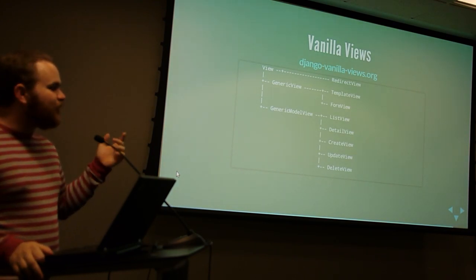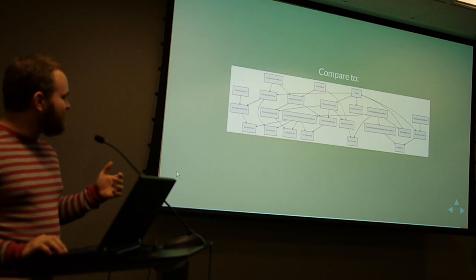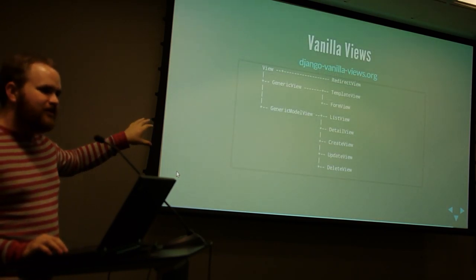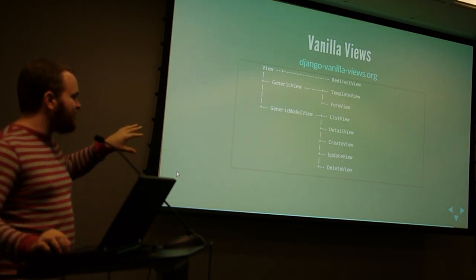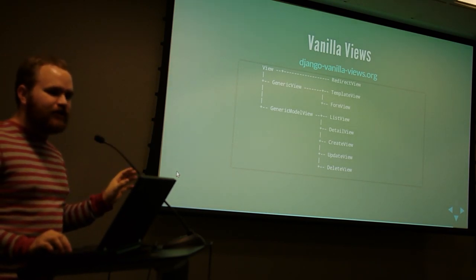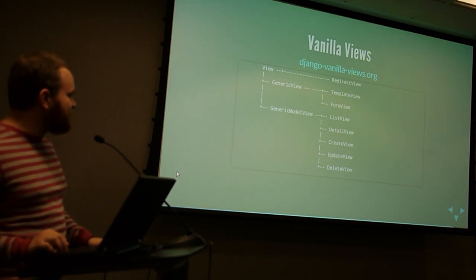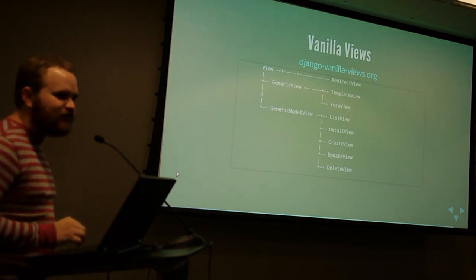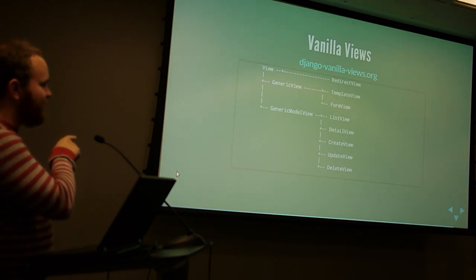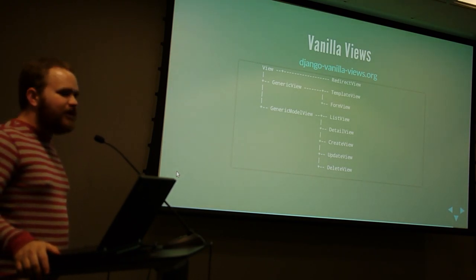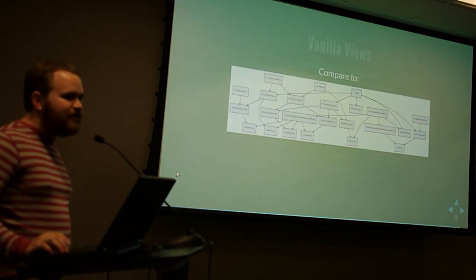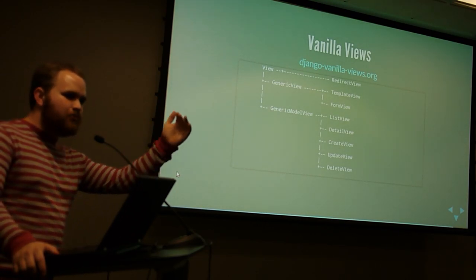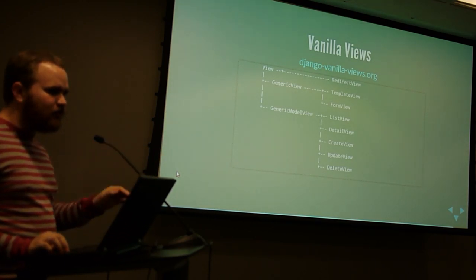Vanilla Views is a project to simplify things. Remember that convoluted tree of Django's generic views? This is the Vanilla Views tree — it provides all the same functionality except for the date views, but it's a much simpler hierarchy. I haven't used these much, but I've heard a lot of good things. If you want to use some generics but don't want to learn that whole messy hierarchy, this is worth looking into. One caveat: they don't use a lot of the mixins from Django's generic views, so it might be harder to override random specific pieces of functionality — you might need to override more at once. Blessing and a curse.